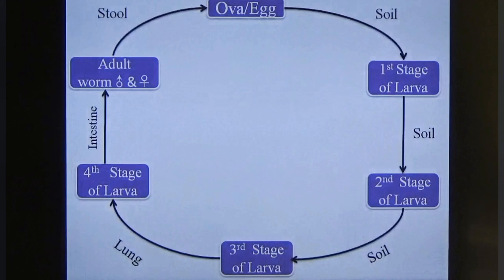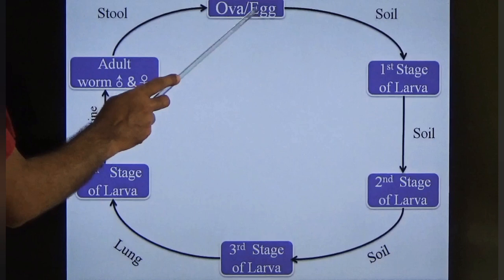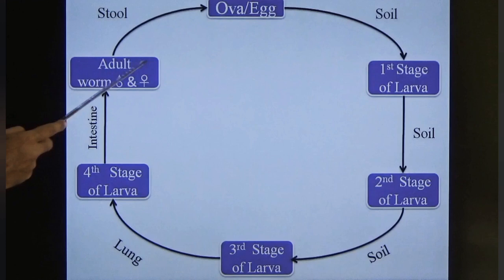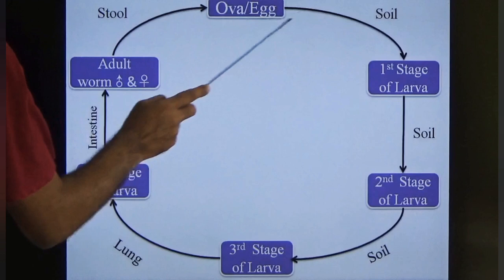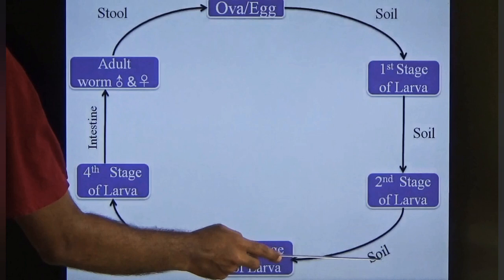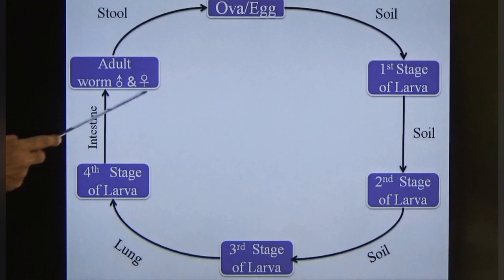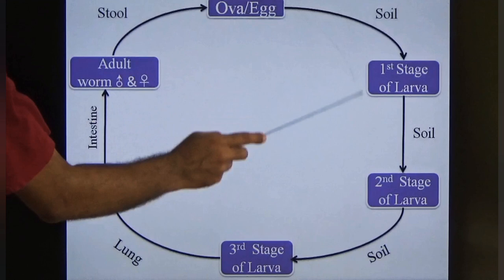All intestinal nematodes develop from ova to first stage, second stage, third stage, then fourth stage, then adult worm, which produces eggs in the soil and the life cycle repeats. The third stage in soil is the infective form, which migrates to the lungs, then reaches the intestine and matures into an adult worm, which produces eggs.